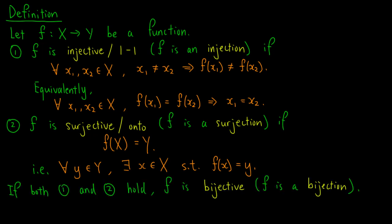If both conditions hold — in other words, f is both injective and surjective — we say that f is bijective, or that f is a bijection.